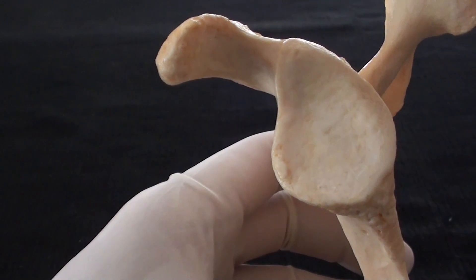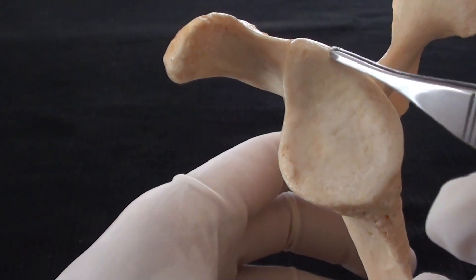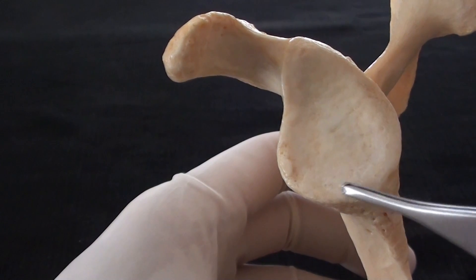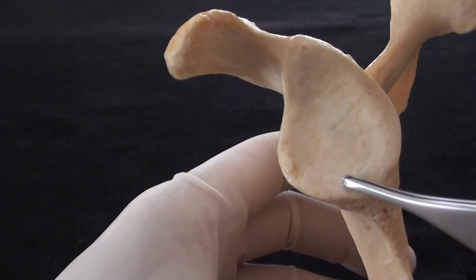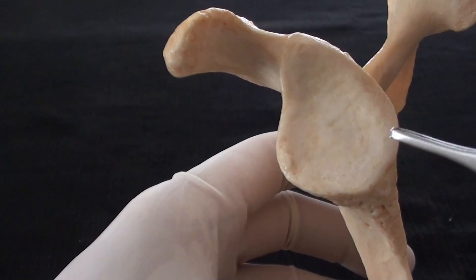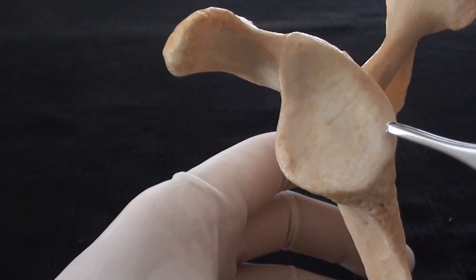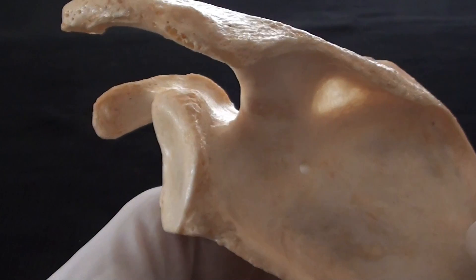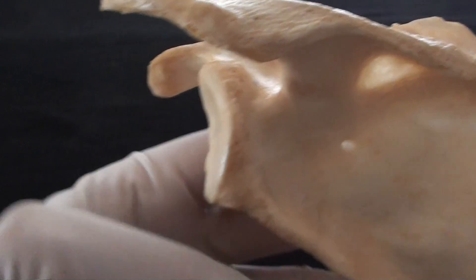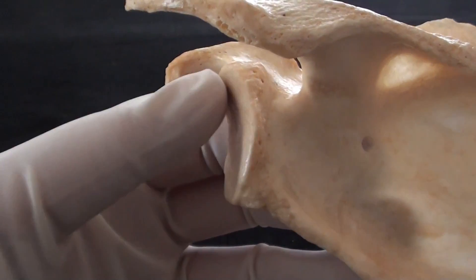If we take a closer look at the glenoid fossa or glenoid cavity we would realize the moment we compare it to the size of the head of the humerus that they are not a perfect match. The glenoid fossa is very slightly concave and it almost looks like a flat articular surface.